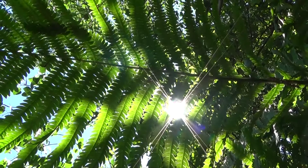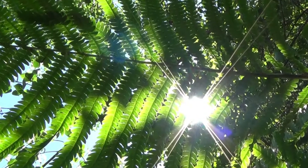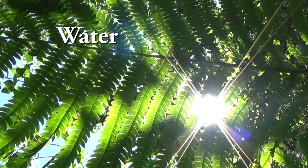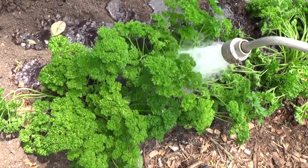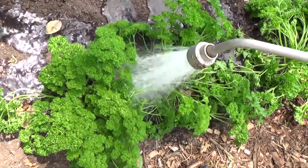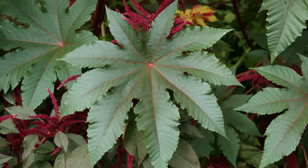Light energy is just one of the three ingredients needed to make sugar. Plants also need water and carbon dioxide. Water is taken in through the roots, and carbon dioxide enters through special pores in the leaf called stoma.